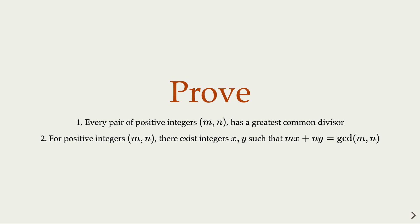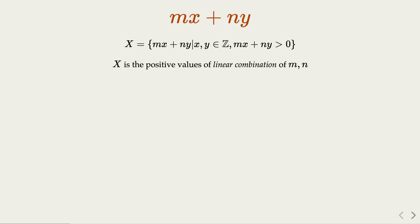These two are related, the proof is the same. Here we consider what is called linear combination of m and n, that is mx plus ny where x, y are integers. We take the positive values of it.